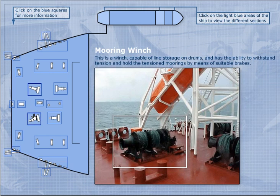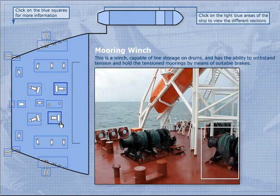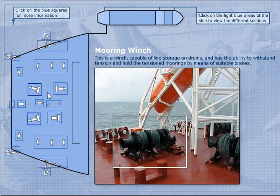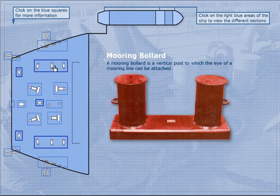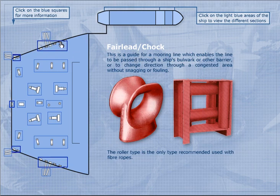Here you can find the mooring winch. Here is the mooring winch again, and here you can find another mooring winch and mooring bollards. Here is a fairlead — this is a guide for a mooring line which enables the line to be passed through a ship's bulwark or other barrier, changing direction through a congested area without snagging or falling.